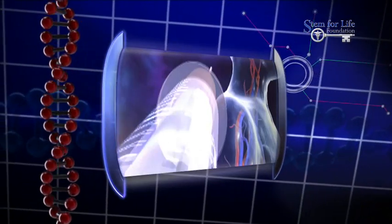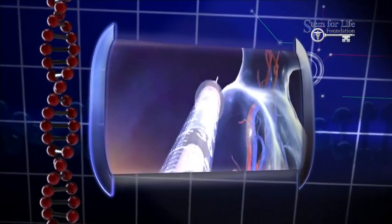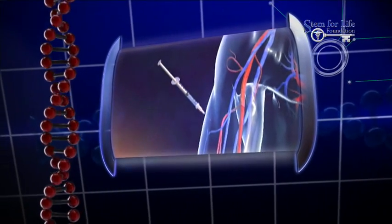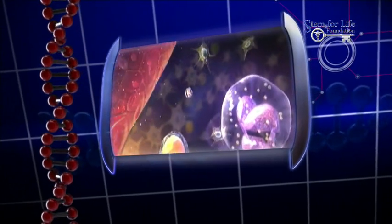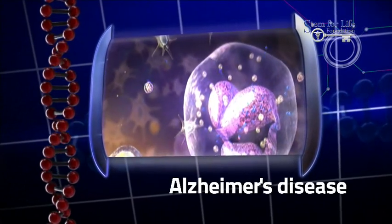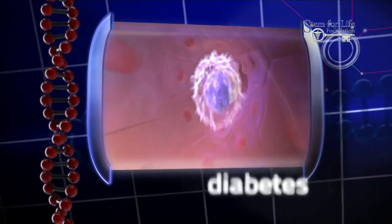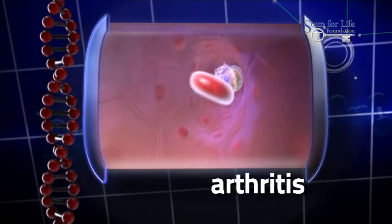This means that adult stem cells could be used for what's called cell-based therapies, offering the possibility of a renewable source of replacement cells and tissues to treat diseases including Alzheimer's disease, spinal cord injury, stroke, burns, heart disease, diabetes, arthritis, and more.